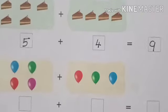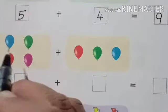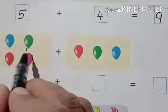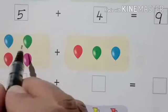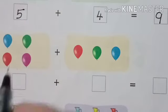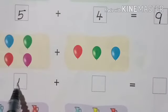Now next one children. See. Now in one box, one side, you have 4 balloons. 1, 2, 3, 4. Write 4 in your box.